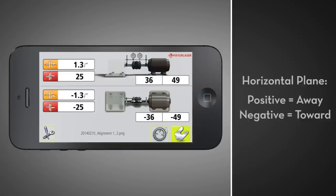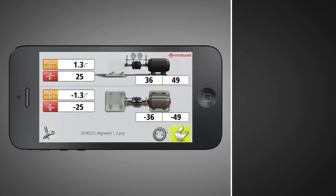In the horizontal plane, positive values mean that the feet are sitting away from you; negative values mean that the feet are sitting toward you. If you need to re-measure, tap the measurement icon.